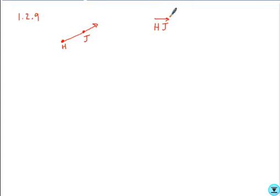So we have ray H J, again, with the symbol above the letters. It does need to have a single-sided arrow that points to the right. So ray H J can be designated in this form.